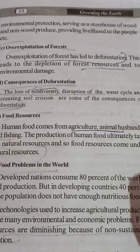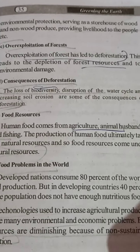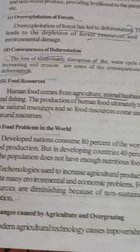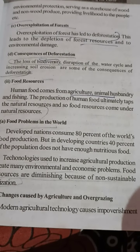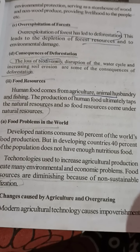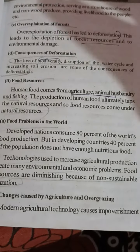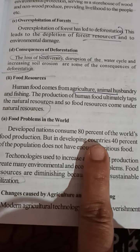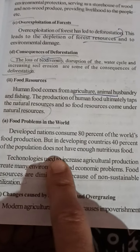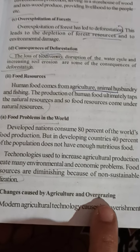The second renewable resource is food. Human food comes from agriculture, animal husbandry, and fishing. Food production ultimately taps natural resources, so food resource falls under natural resources. Regarding food problems in the world, developed nations consume 80 percent of world food production, while in developing nations, more than 40 percent of people don't have enough nutritious food.